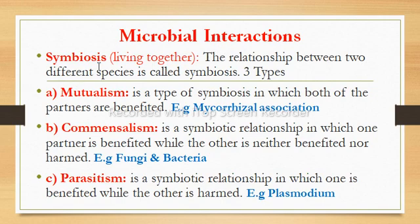Microbial interactions include symbiosis, which is the relationship between two different species. There are three types of symbiosis: mutualism, commensalism, and parasitism. Mutualism is the interaction between two microorganisms in which both partners are benefited. An example is the mycorrhizal association between plants and Rhizobium bacteria — the plant gives protection to Rhizobium, and in return the bacteria fix nitrogen for the plant. When benefit is exchanged for food or nutrients, this is called syntrophism.